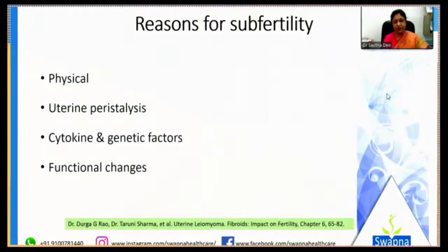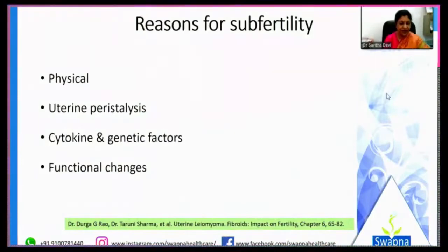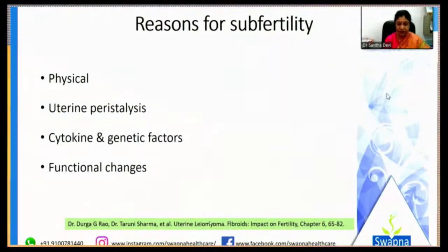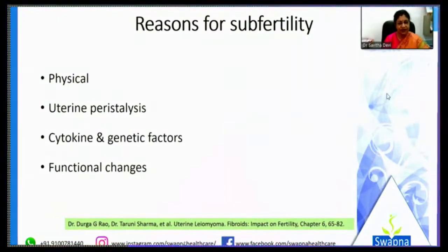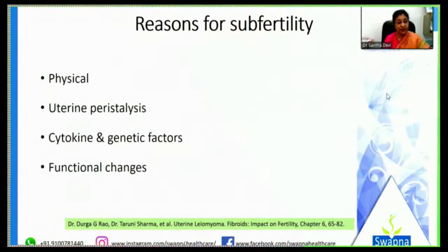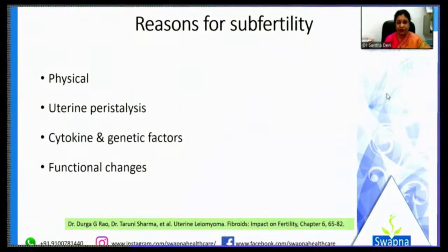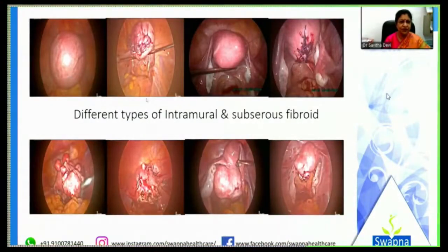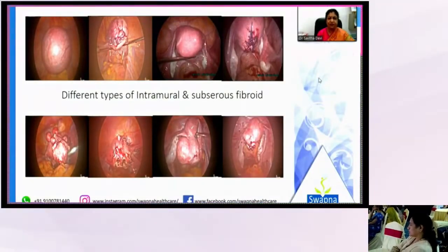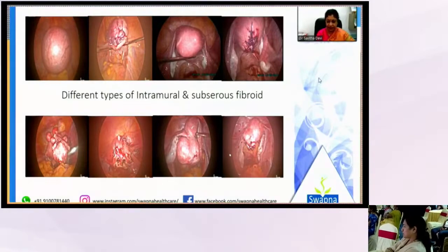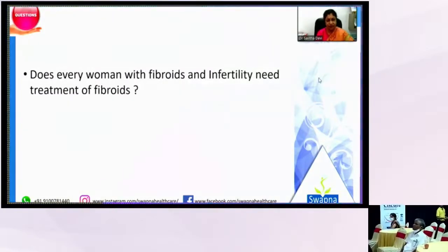Fibroids are the commonest tumors we encounter, especially in infertile women. There are many reasons for infertility — as taken from Dr. Durga Rao's contribution chapter in the uterine leiomyoma textbook — including physically disrupting the cavity, disturbing uterine peristalsis, locally disturbing cytokines and genetic factors, and producing functional changes in the endometrium and myometrium. Fibroids can be intramural, subserous, multiple, single, in different locations.